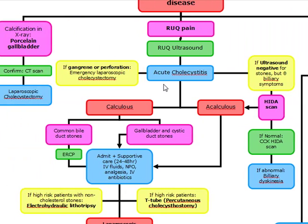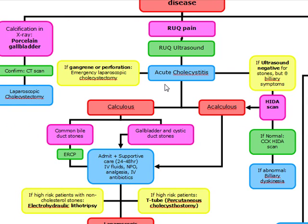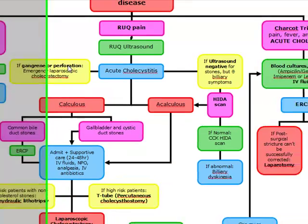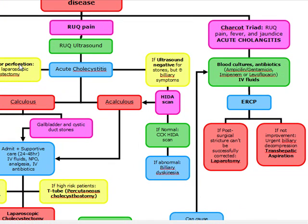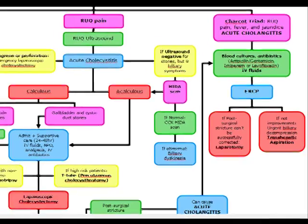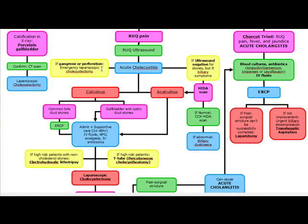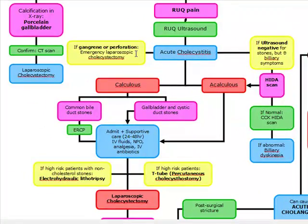Now, when we've diagnosed acute cholecystitis, if on the ultrasound we see gangrene or perforation — this can present with generalized peritonitis or emphysematous cholecystitis — if we see any of these, it's going to indicate gangrene or perforation, and at this point we're going to have to do an emergent laparoscopic cholecystectomy.